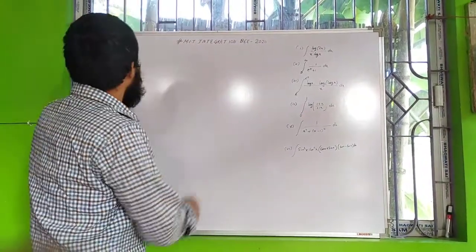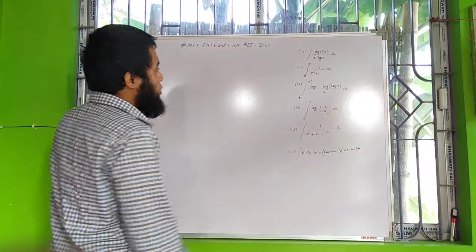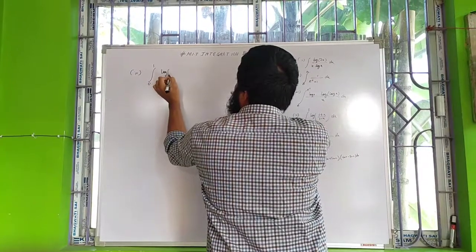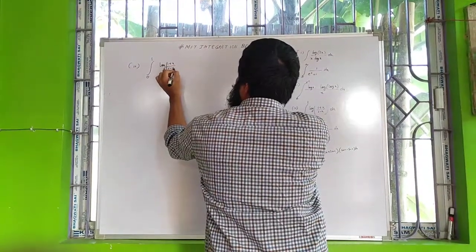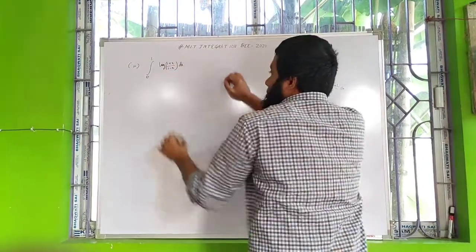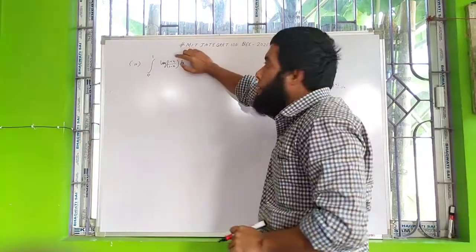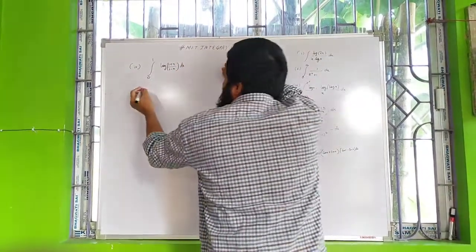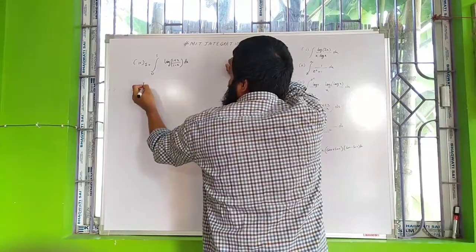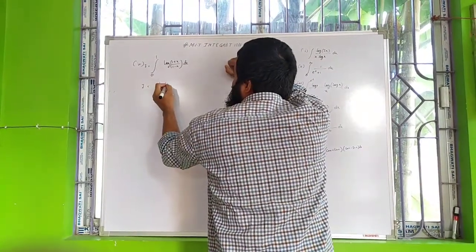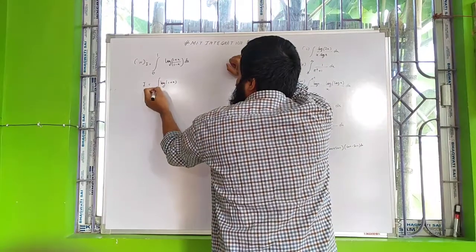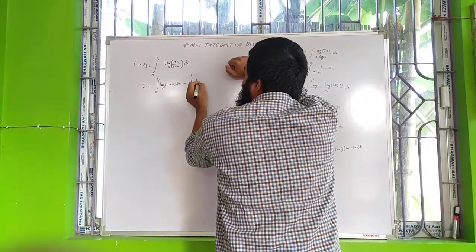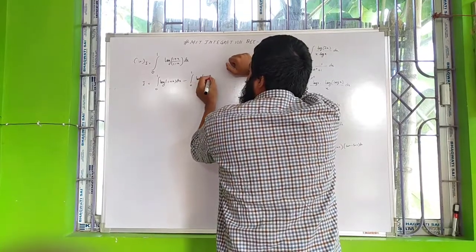Now we will solve problem number 4, which is the integral from 0 to 1 of log((1+x)/(1−x)) dx. Since log(a/b) = log a − log b, I can write this as the integral from 0 to 1 of log(1+x) dx minus the integral from 0 to 1 of log(1−x) dx.